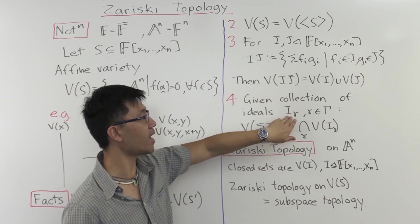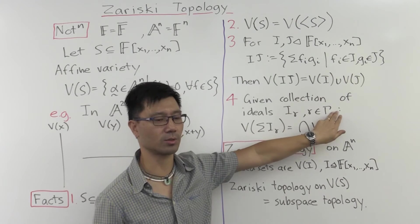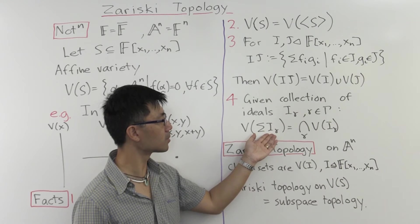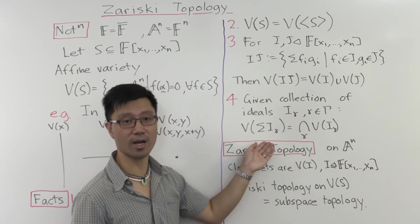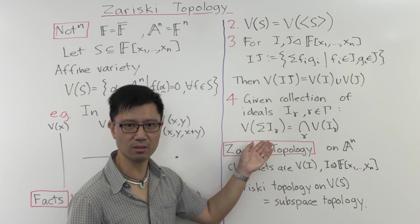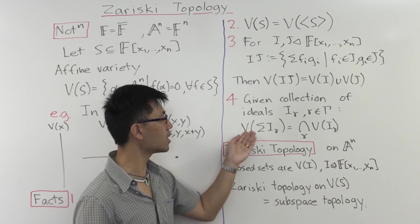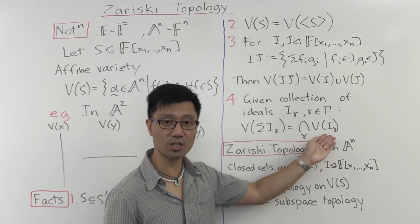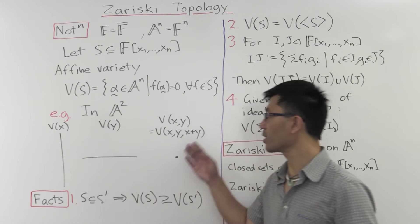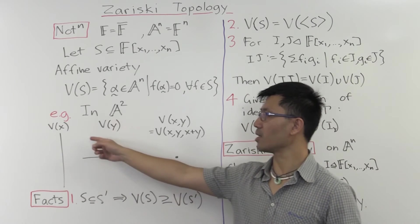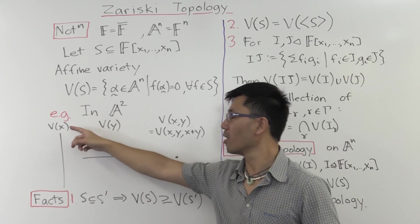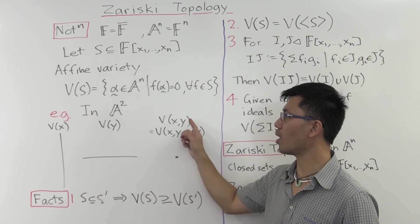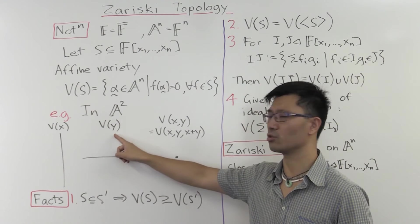Okay, so suppose now you have a whole collection of ideals indexed by gamma inside this capital gamma. Another ideal you can form is the sum of all these ideals. So the elements in here are just sums of elements inside here, of course finite. And it's easy to check that this is an ideal. And the question is, what's the relationship between the variety of this sum and the variety of these individual i gammas? And the answer is, it's just the intersection of all these elements. And that's something that we saw in this example here. If you intersect the ideal generated by x, this variety here with this one here, you get this here. And that corresponds to the fact that the ideal generated by xy is just the sum of the ideal generated by x with the ideal generated by y.